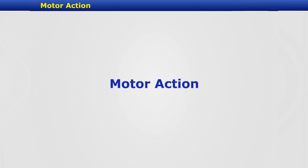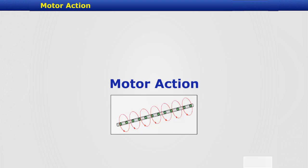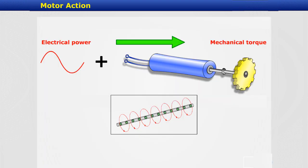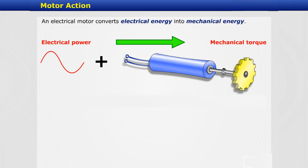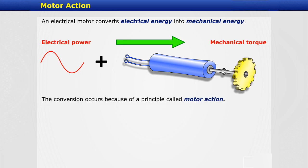Motor action. Let's examine the interaction between a conductor that represents a motor armature and a magnetic field that represents a motor's main field. An electrical motor converts electrical energy into mechanical energy. The conversion occurs because of a principle called motor action.